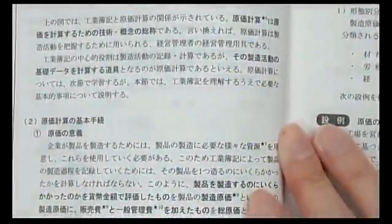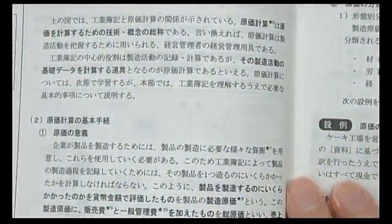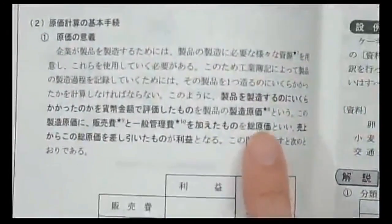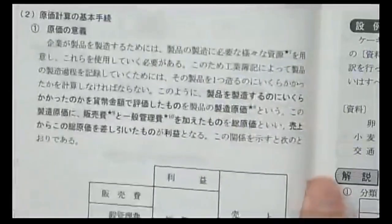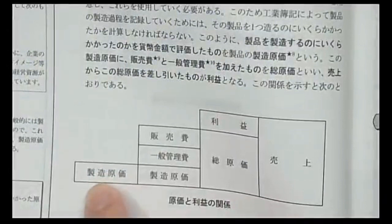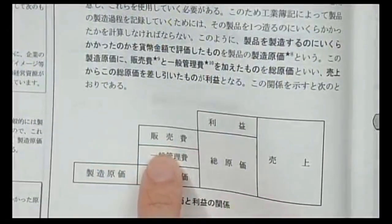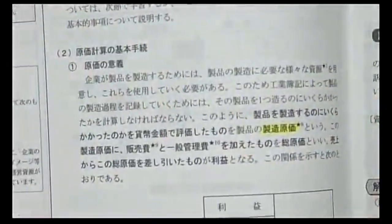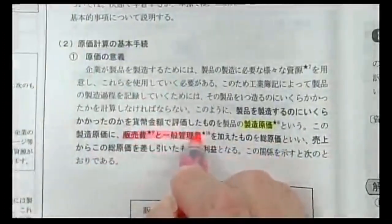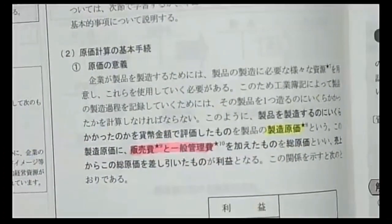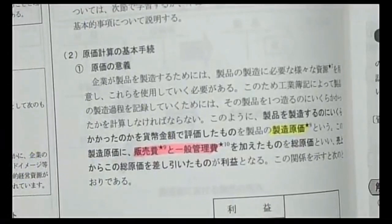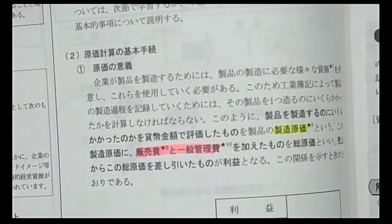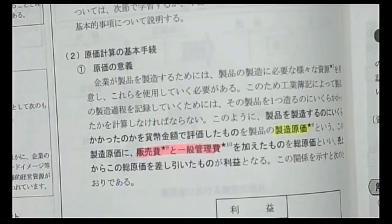原価計算の手続きについて見ていきます。原価は大きく製造原価と販売費及び一般管理費（販管費）に分かれます。製造原価は製造にいくらかかったかを示し、販管費は販売活動や会社全体の管理活動にいくらかかったかを示します。この合計を総原価と呼びます。